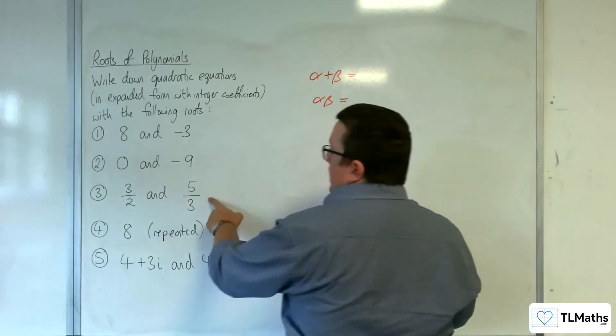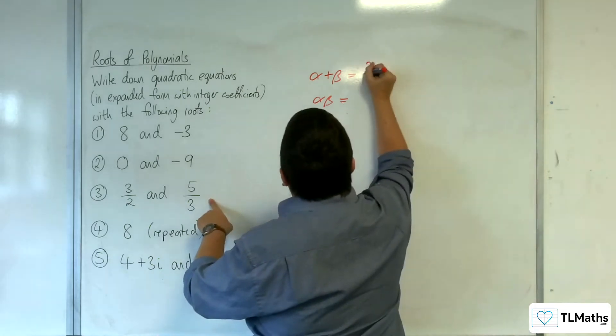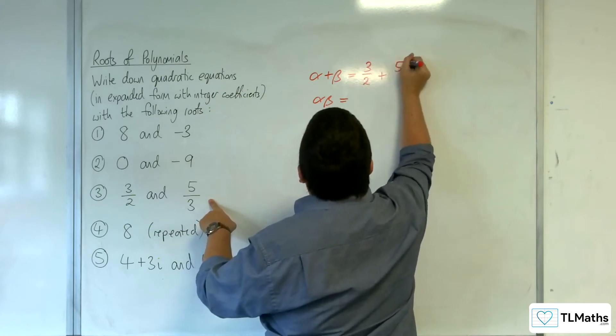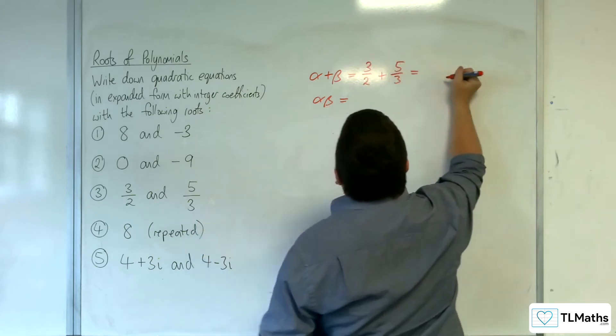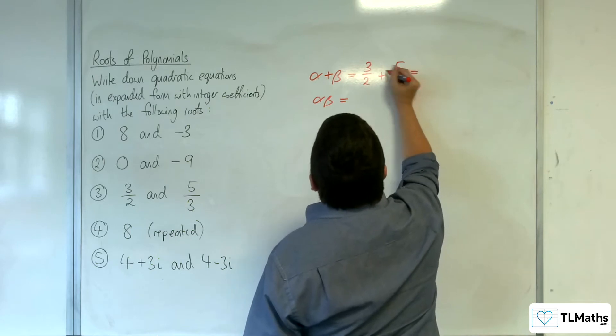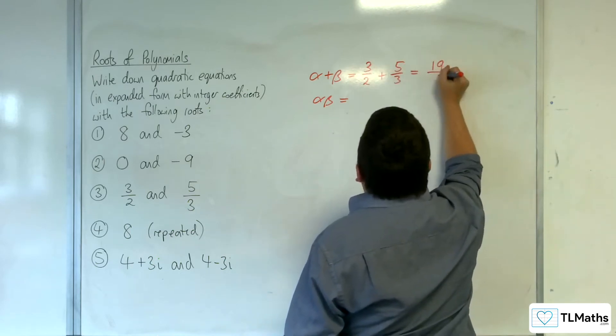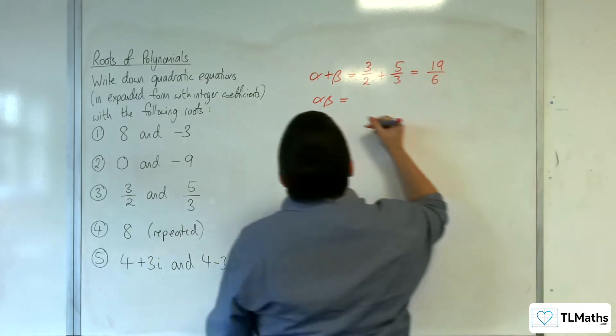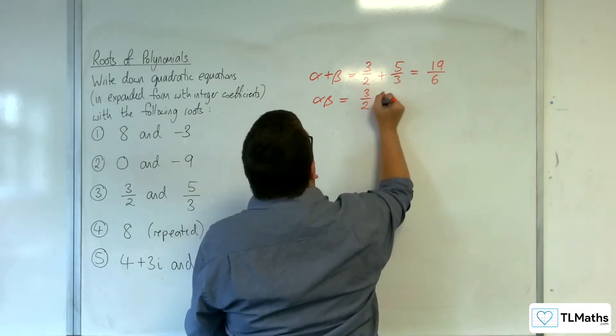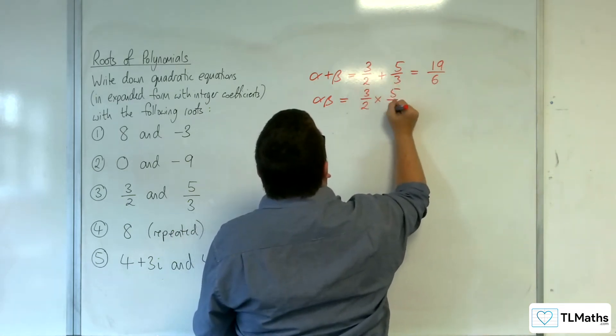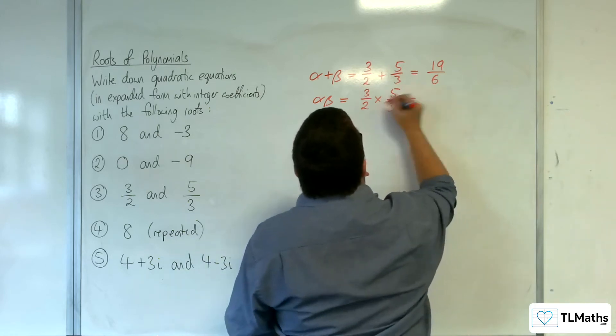So number 3, alpha plus beta is 3 halves plus 5 thirds. So we've got 9, 19 over 6. And then you've got alpha beta, so 3 halves times 5 thirds is going to be 5 halves.